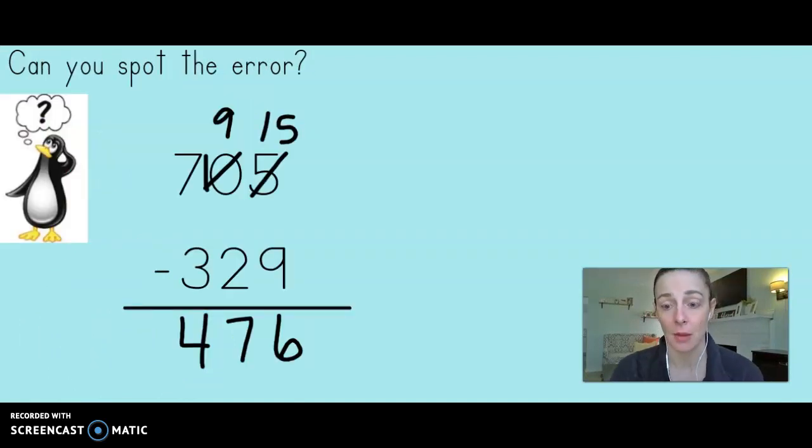Now this problem, as you can see, is already completed for you. But do you see our friend over here in the corner? This is Puzzled Penguin. I'm sure that most of you have seen Puzzled Penguin before. Now he is always really close to getting the correct answer, but he always makes just one mistake. He always just makes one little error. So let's take a look at Puzzled Penguin's problem and see where his error was.